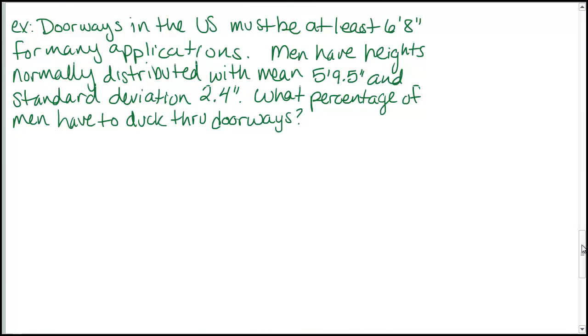One more example. Doorways in the United States must be at least 6 foot 8 inches for many applications. That's typical for residential doorways. Now men have heights normally distributed with a mean 5 foot 9.5 inches and a standard deviation 2.4 inches. And I want to know what percentage of men have to duck through doorways. So we're looking at the distribution of men's heights. On average, men are 5 foot 9.5 inches and this is in the U.S.